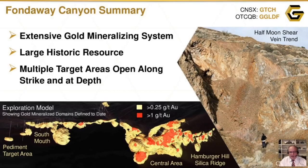Bringing it into summary here — you can see back to the three-dimensional gold domain model. In red you can see where the higher grade material is located, with the lower grade kind of halo around it.